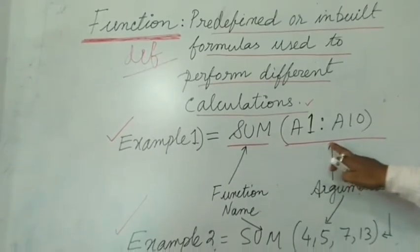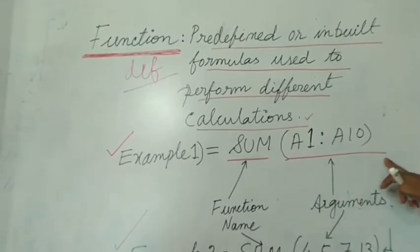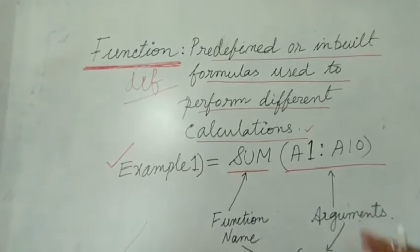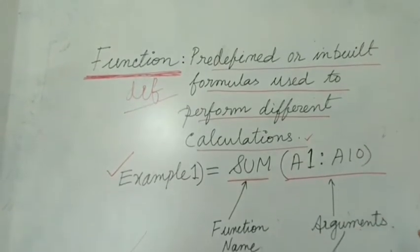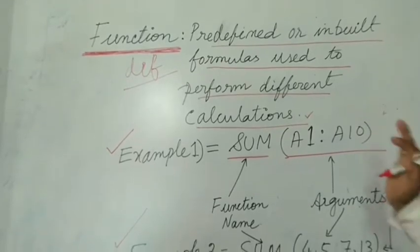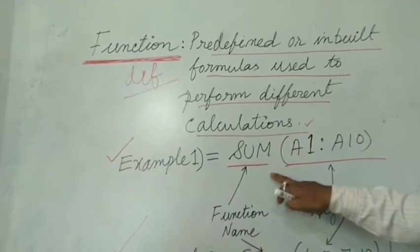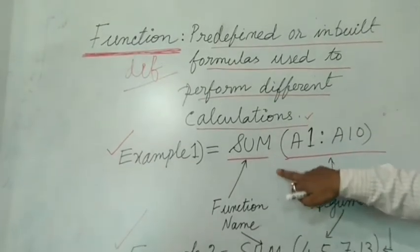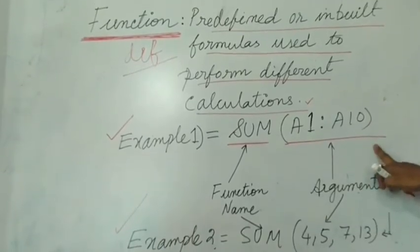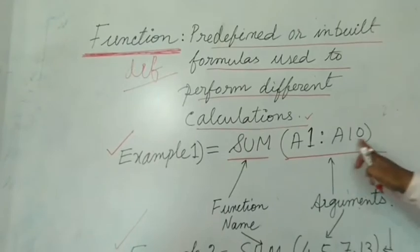For example: =SUM(A1:A10) means in that column it will find out the sum and display it. In a function, there are two parts: the function name and the argument, separated by a bracket.